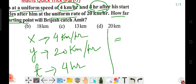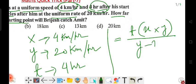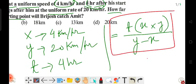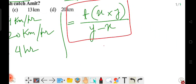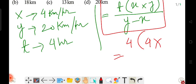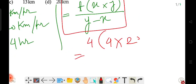Now I'm going to use a trick formula. When Brijesh catches Amit, the distance will be equal. To find this distance, use T into X into Y divided by Y minus X. This is the formula. T is the time, X is Amit's speed, Y is Brijesh's speed. X is four and Y is 20.